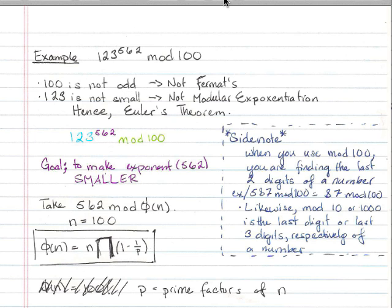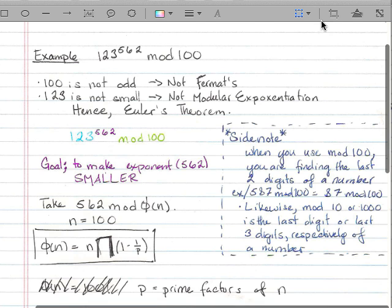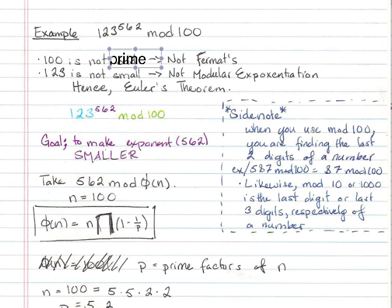So we don't want to use Fermat's. There we go. Fix that. 100 is not prime. Therefore, we don't want to use Fermat's. And then our x, our 123 here, is not really small. So we don't want to use modular exponentiation because that would be a lot of work. We could, but that would be a lot of work. Hence, we're going to use Euler's theorem.